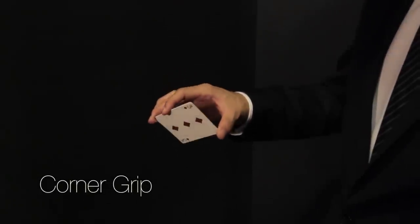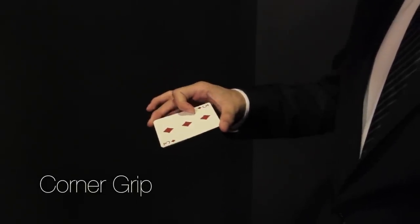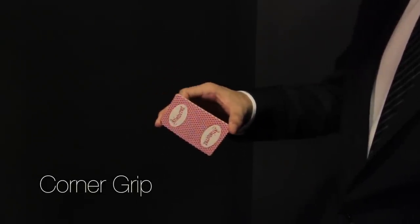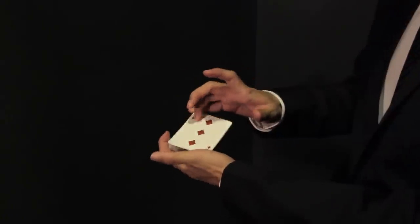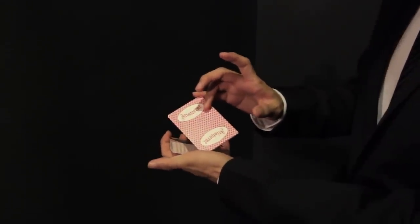Corner grip. As the name suggests, a small packet of cards is held at opposite corners. They can be held not only between your fingertips, but also with the base of your thumb. The thicker the packet, the harder this grip is.